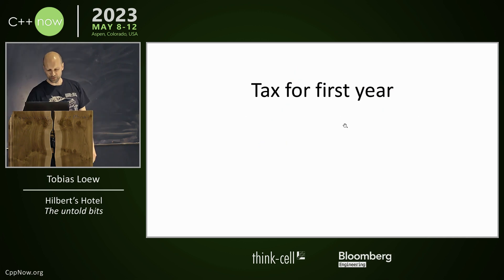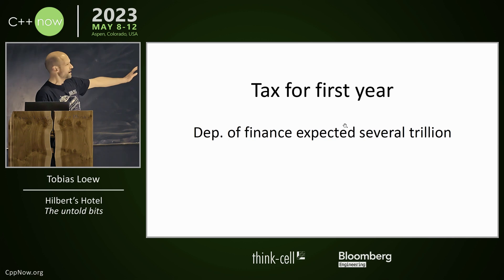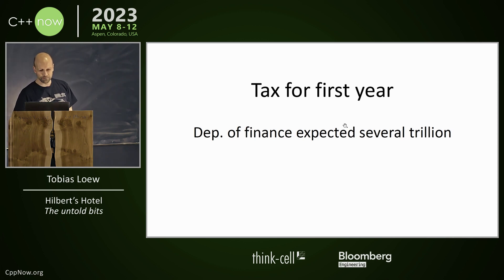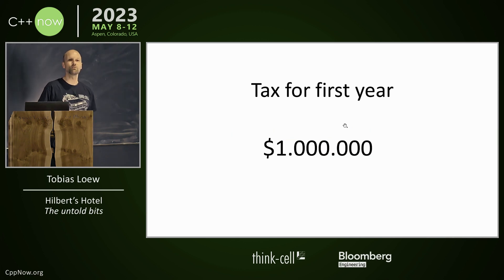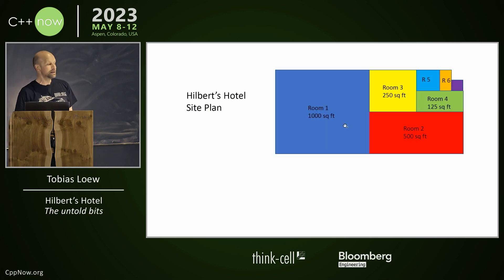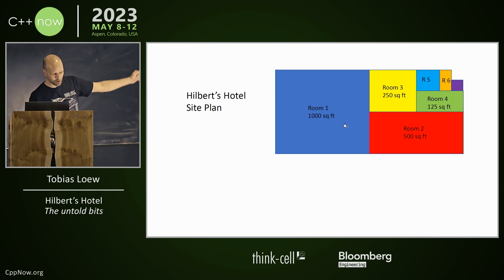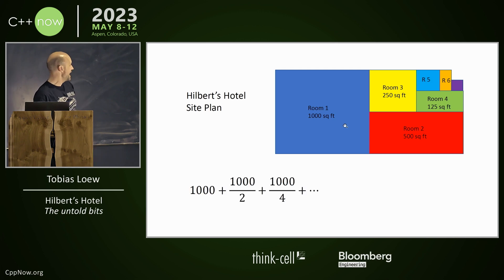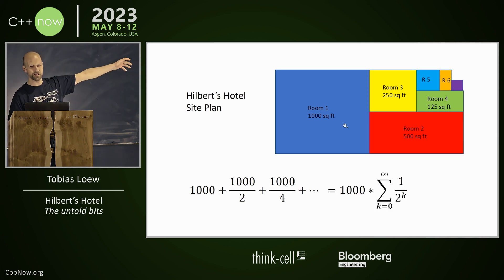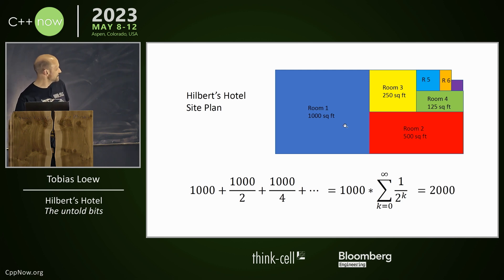When the tax bill came for the first year, the Department of Finance somehow expected several trillion dollars. But they just received one million dollars. Hilbert showed them the site plan: room one at 1000 square feet, room two at 500, room three at 250, and so on — 1000 divided by two, divided by four. This sums up to 1000 times the geometric series, which is 2000, and 2000 times 500 gives a million.